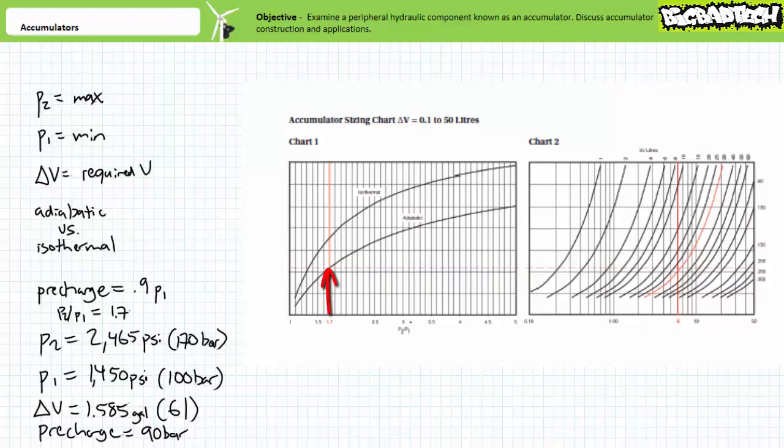Using chart 1, locate 1.7 on the x-axis and draw a vertical line to the top of the chart. Mark where this line intercepts the appropriate curve. In this case, we've got a fast cycle time, so we're going to use the adiabatic curve. From here, we'll draw a horizontal line across to chart 2. Now, locate the required accumulator output, delta V, on the horizontal axis of chart 2. In this case, 6 liters. Draw a vertical line to the top of the chart. Locate the intersection of this vertical line and the previous horizontal line. Locate the first curve to the right of this intersection and follow it up to the top to determine what size of accumulator this particular manufacturer recommends. In this case, they're saying get at least a 30 liter accumulator.